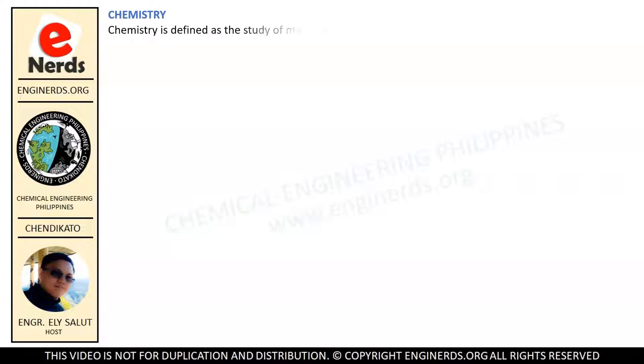Chemistry is defined as the study of matter and the changes it undergoes. It is the study of the properties, composition, and structure of substances. Furthermore, chemistry seeks to explain the transformations that these substances undergo and the energy that is released during the processes. It is therefore important to understand matter and its classification in order to learn the key concepts of chemistry.